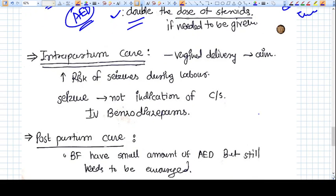Intrapartum care. Vaginal delivery is preferred. Cesarean section is only done for obstetric reasons. One thing you need to concentrate on: the risk of seizure is increased during labor. Why? Because of lack of sleep, hyperventilations, and sometimes the patient is very anxious and mentally unstable. That's why the risk of seizures is increased.